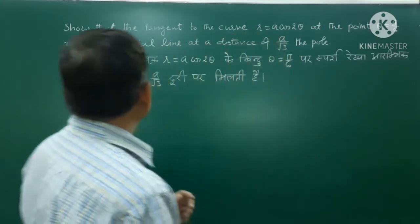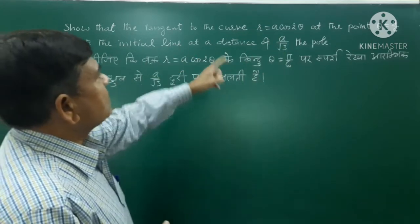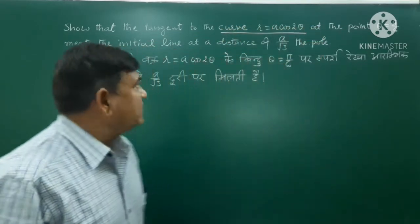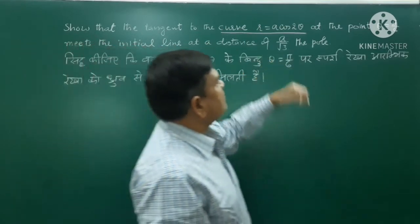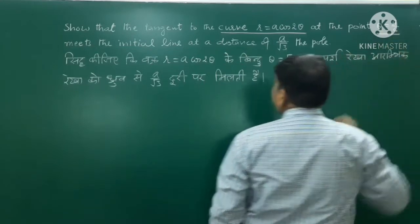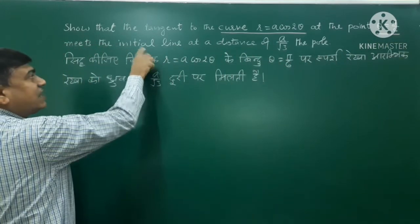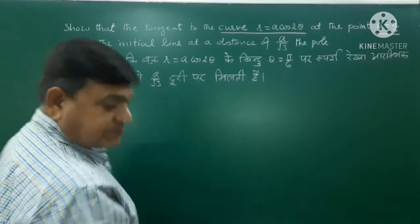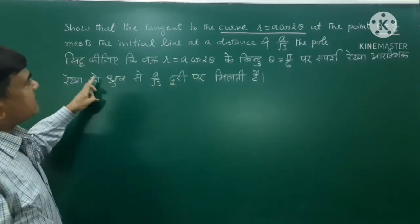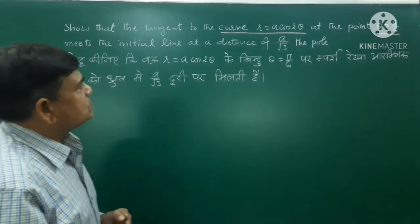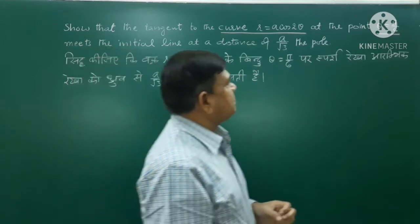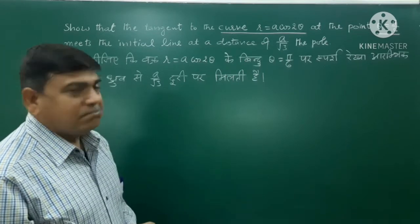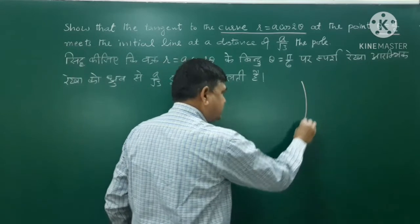The question is: show that the tangent to the curve r = a·cos(2θ) at the point θ = 5π/6 meets the initial line at a distance of a/√3 from the pole.